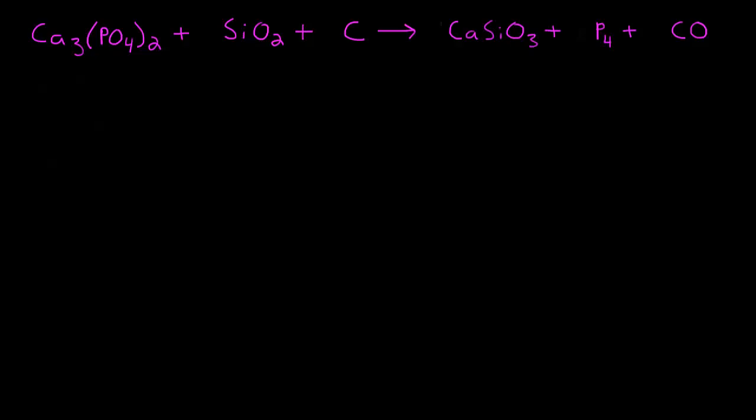Okay, so let's try an equation that's a little bit more difficult. Here we have one with six unique elements in it. We have tricalcium phosphate plus silicon dioxide plus elemental carbon reacts to form calcium silicate, tetraphosphorus, and carbon monoxide.